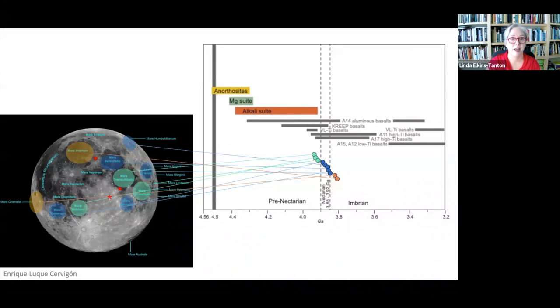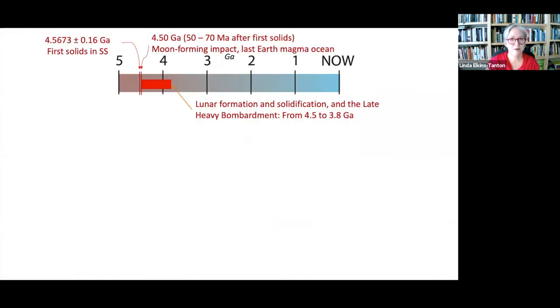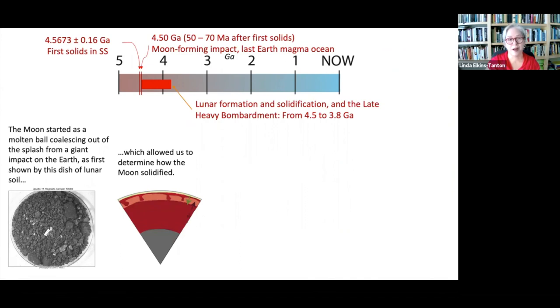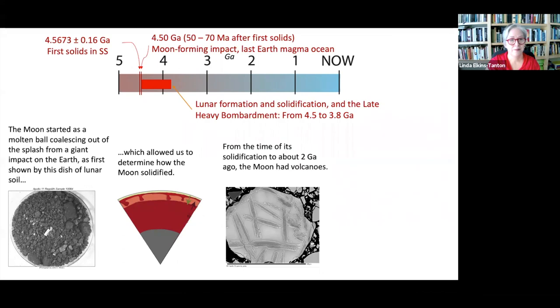And so finally, here's our timeline from today. The moon started as a molten ball coalescing out of the splash from a giant impact with the earth, as first shown by this dish of lunar soil. That allowed us to determine how the moon solidified with this floating anorthosite lid.